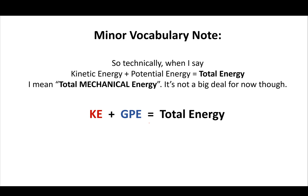Technically, when I say kinetic energy plus potential energy equals total energy, I mean total mechanical energy, ignoring things like heat, friction, and dissipation. But that's not a big deal for now.